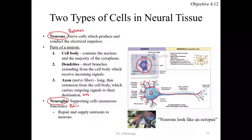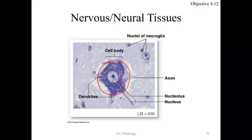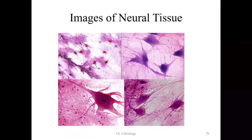When looking at neural tissue slides, the neuron is prominent, and you'll notice the neuroglia surrounding it. Here we have motor nerve fibers and small neurons. These are the neurons — the octopus shape — and all the surrounding material is neuroglia. That is what neural tissue looks like under a microscope.